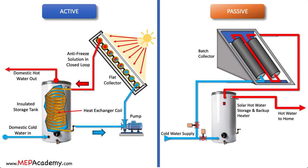This creates a continuous flow of warm water if there is sunlight. Passive solar water heaters are characterized by their simplicity and reliance on natural processes. They are often used in residential and small-scale applications, providing a cost-effective and energy-efficient way to obtain hot water. While they may not be as suitable for large-scale commercial projects, the principles of passive solar design can still be applied to aspects of building construction to enhance energy efficiency and reduce reliance on traditional heating systems.